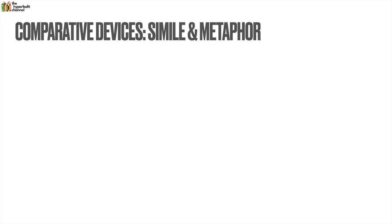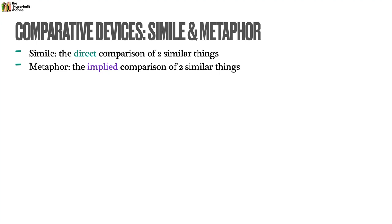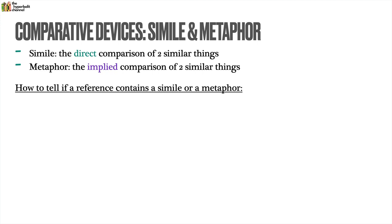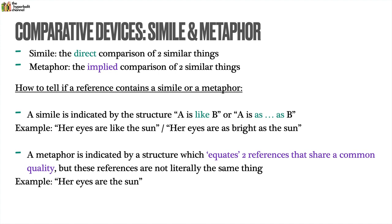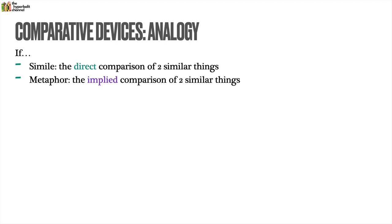Let's start by looking at comparative devices. With simile and metaphor: simile is the direct comparison of two similar things, whereas metaphor is the implied comparison of two similar things. A simile is indicated by the structure 'A is like B' or 'A is as something as B' — for example, 'her eyes are like the sun' or 'her eyes are as bright as the sun.' A metaphor equates two references that share a common quality, such as 'her eyes are the sun' — clearly her eyes aren't literally the sun, but I'm comparing the two to make a point about how bright her eyes are.